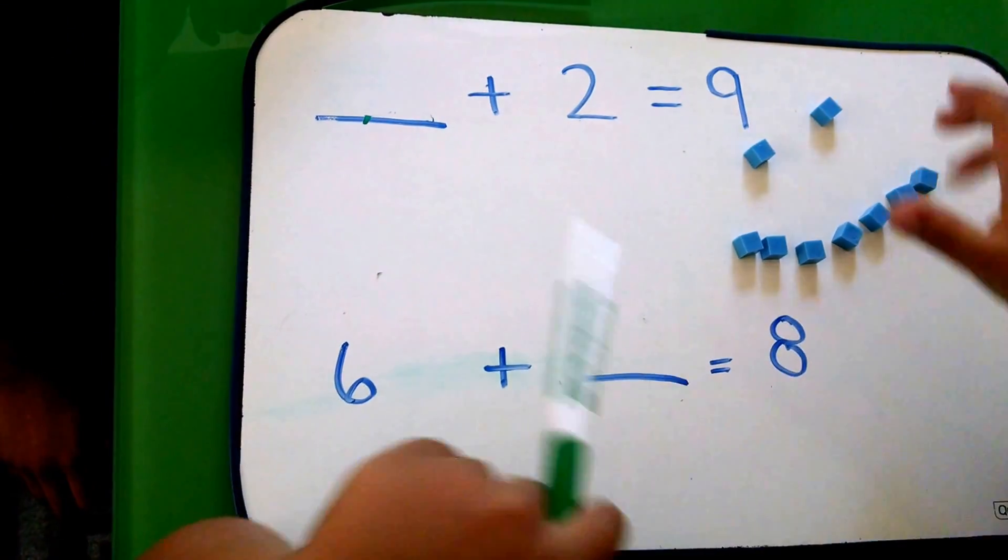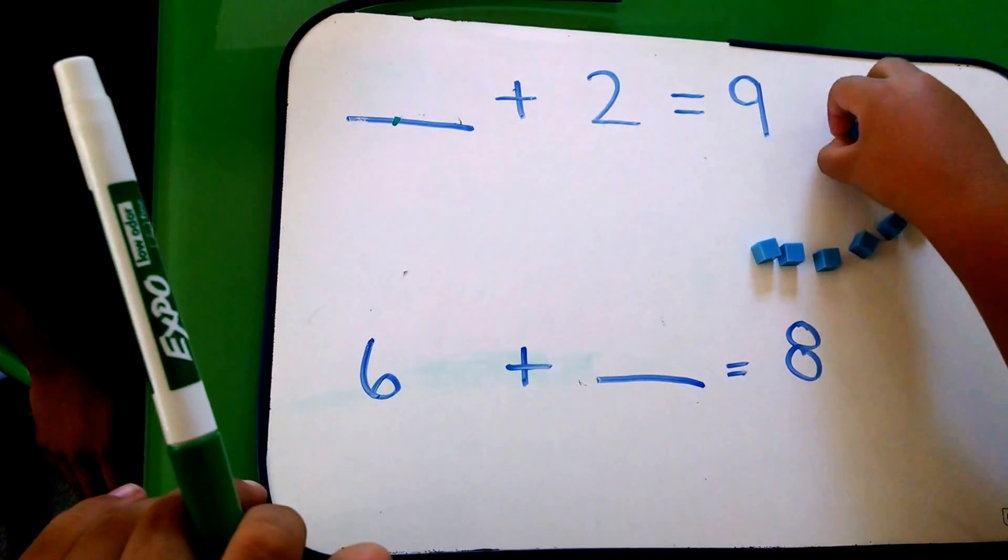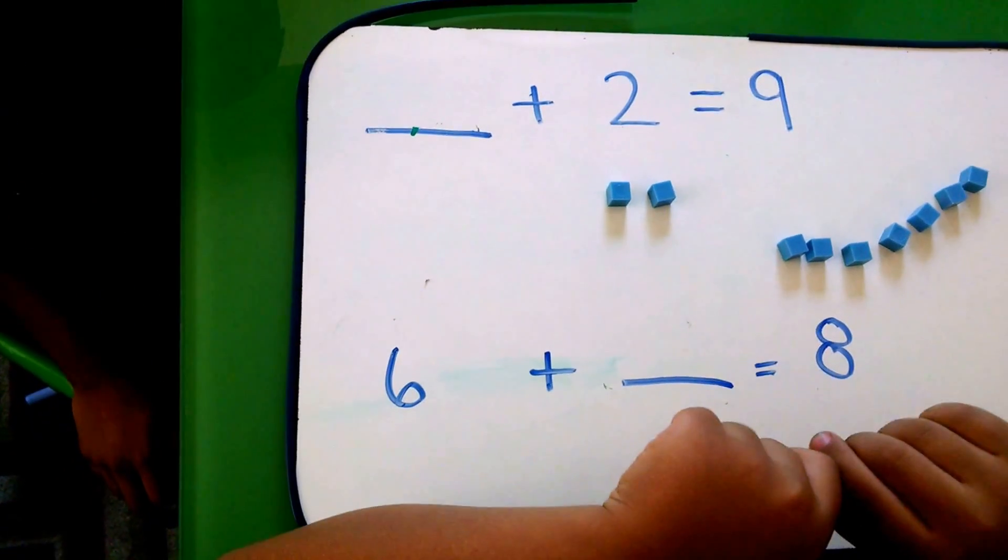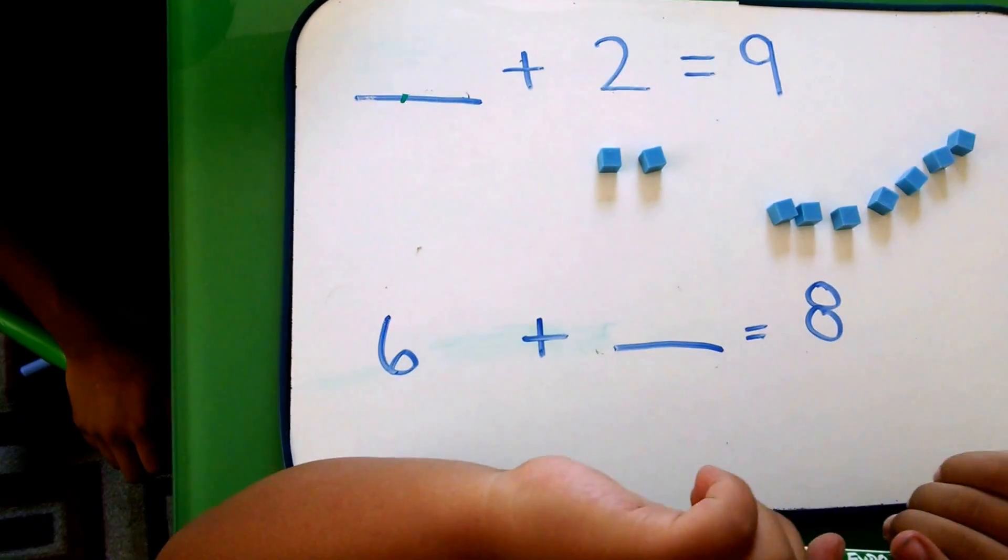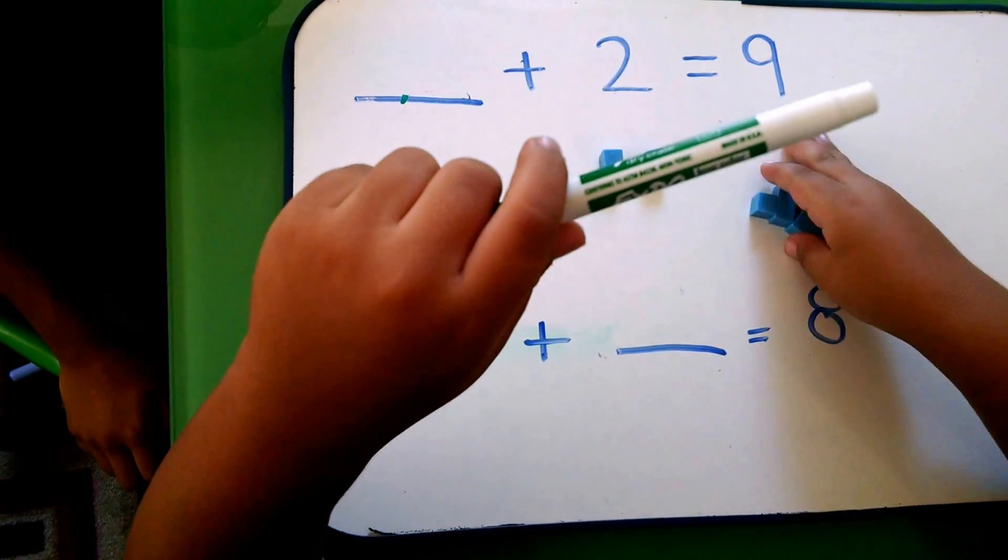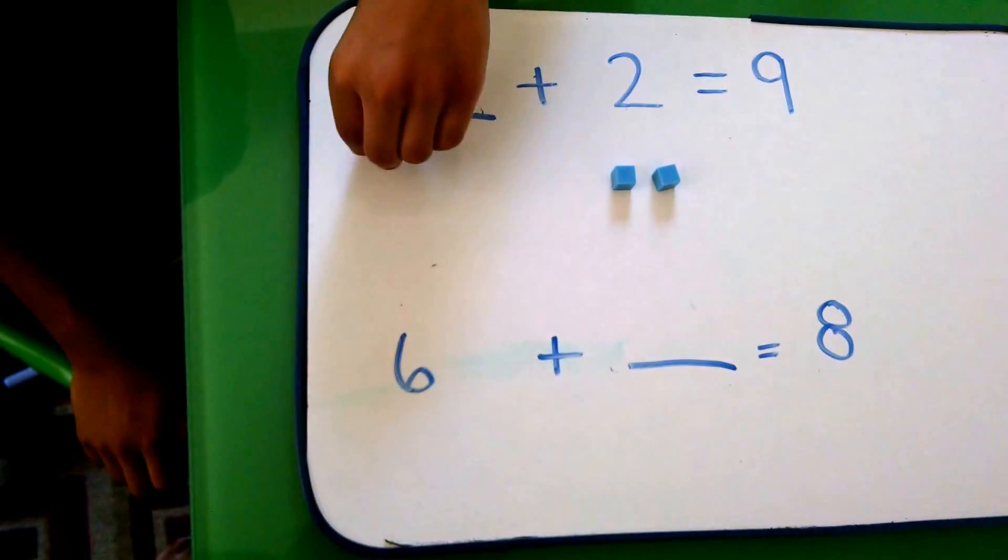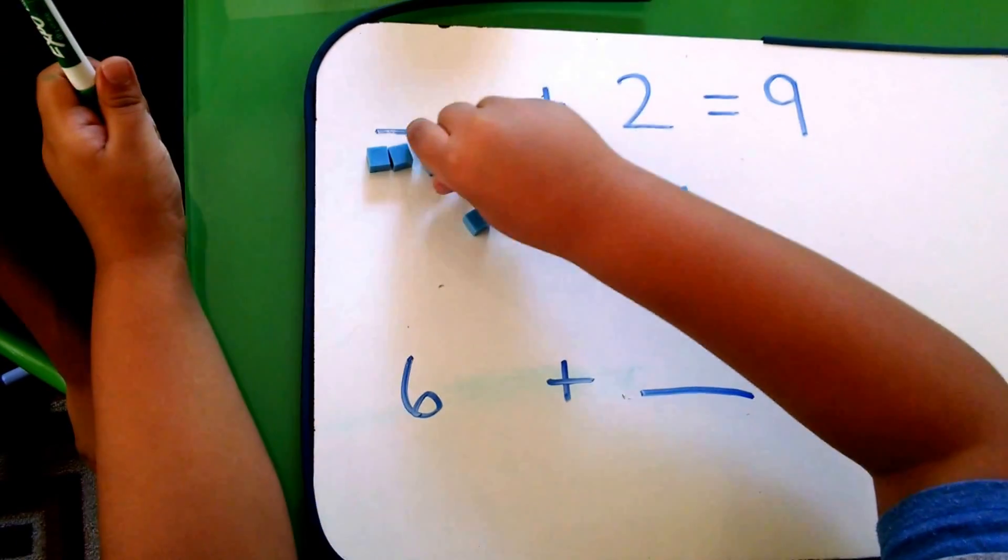So you got the nine blocks. Take away the two blocks and then put it under the two. And then take the rest of the blocks and put it under the wet side.